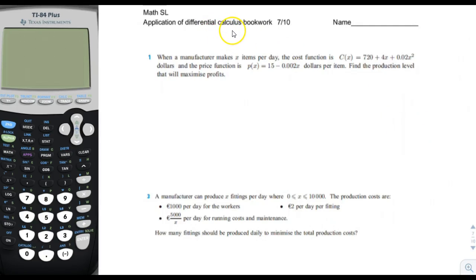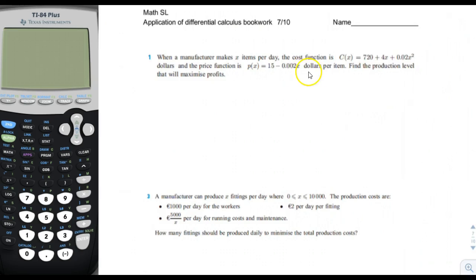Applications of Differential Calculus, page 7. When a manufacturer makes X items per day, the cost function is this, the price function is this per item. Find the production level that will maximize profits.